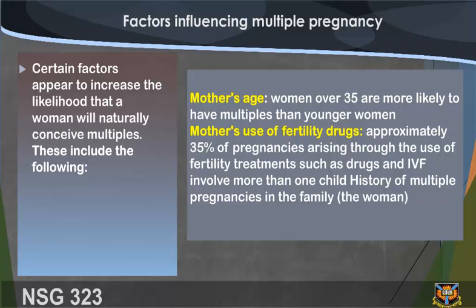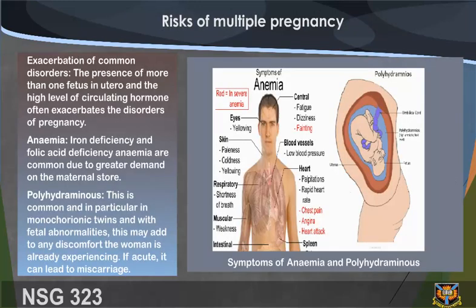Certain factors appear to increase the likelihood that a woman will naturally conceive multiples. These include: mother's age — women over 35 are more likely to have multiples than younger women; mother's use of fertility drugs — approximately 35 percent of pregnancies arising through fertility treatments such as drugs and IVF involve more than one child; and history of multiple pregnancies in the family.